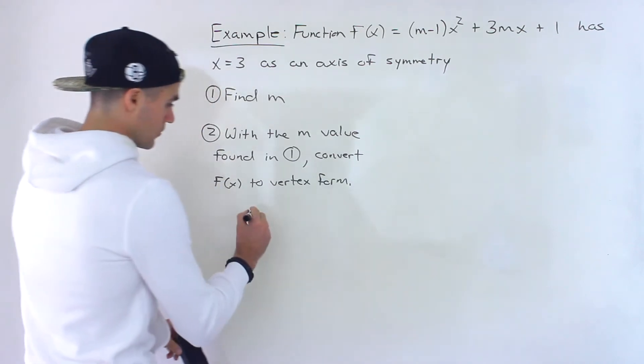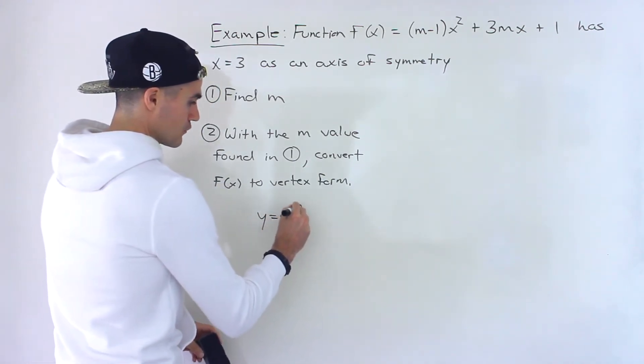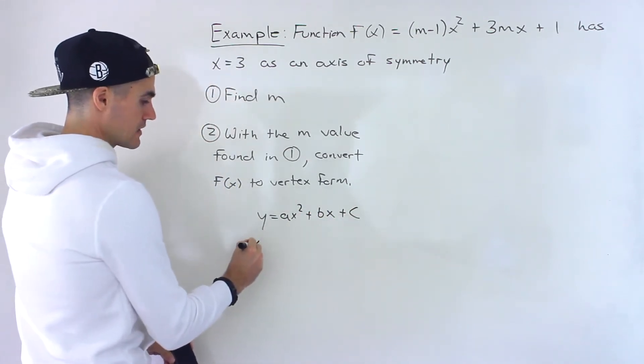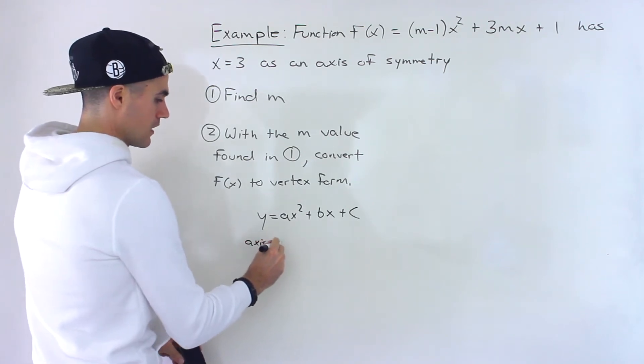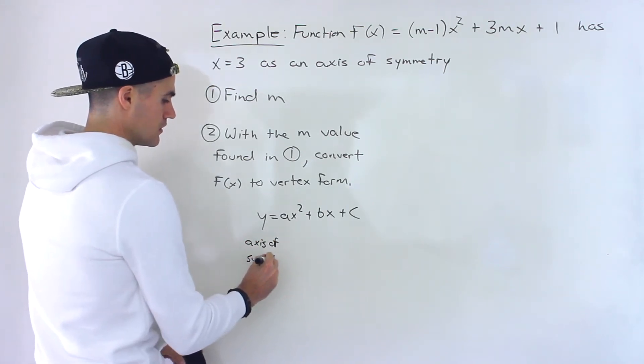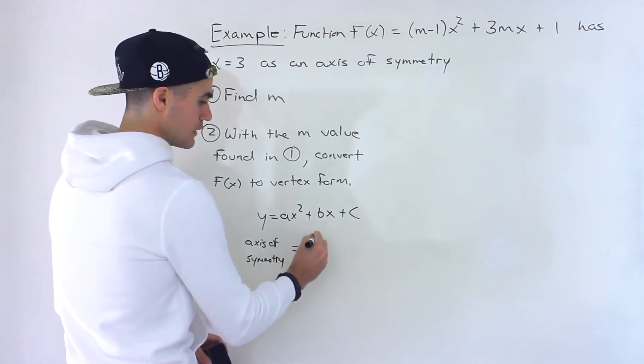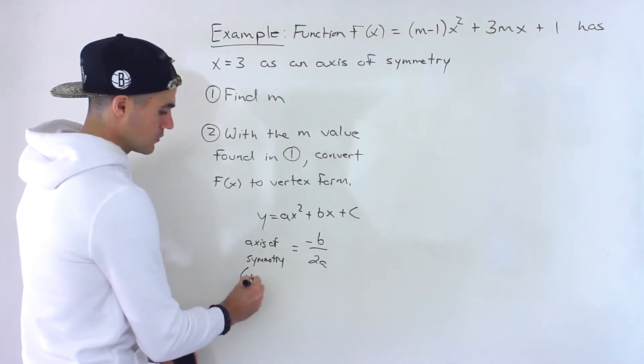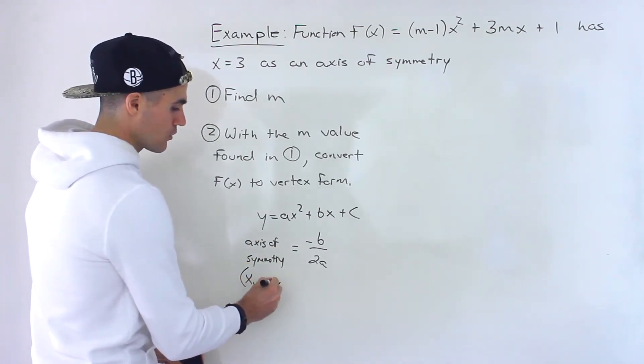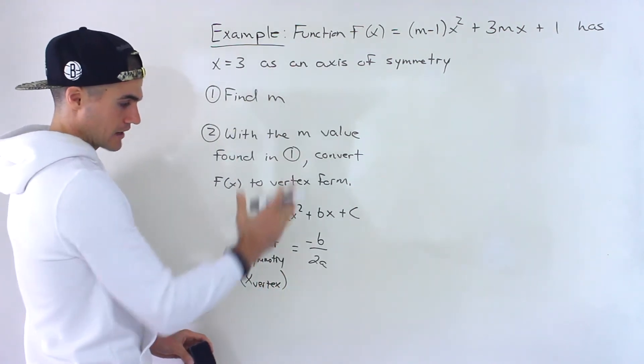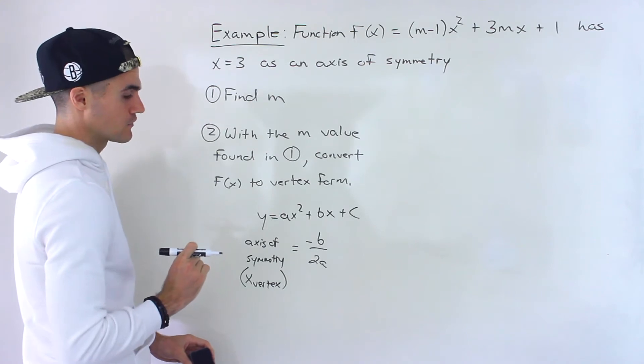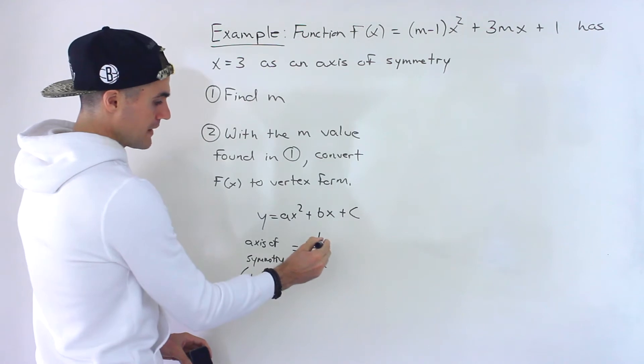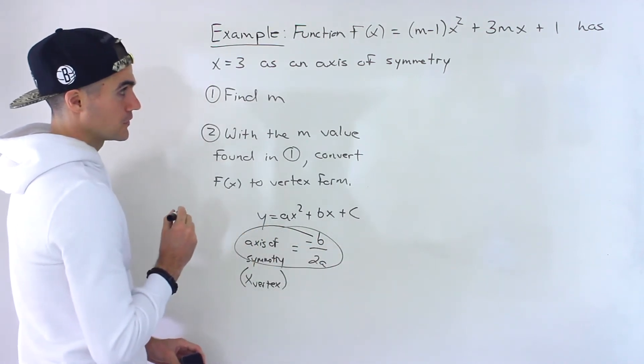Now, just in general, as a review, if we have a quadratic in standard form, then we know that the axis of symmetry is equal to what? It's negative b over 2a. The axis of symmetry or the x value of the vertex - both of those mean the same thing. Basically, the x value that cuts the quadratic in half.